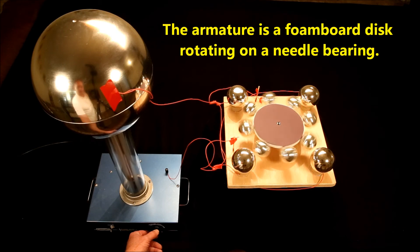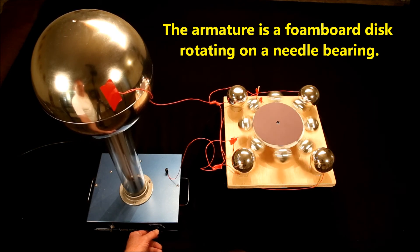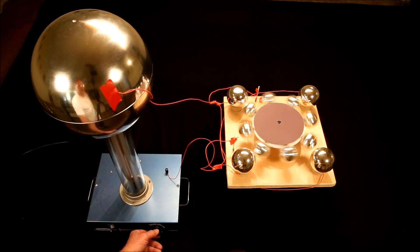As the RPM on the Van de Graaff generator increases, so does the speed of the armature.